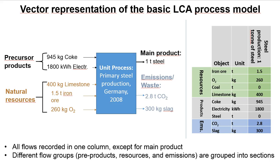We can take a process inventory and put it into vector form. The vector is a column of numbers with three compartments: the first is resource uptake, then product uptake, and then emissions back to the environment. The flow of outputs is the reference unit of the whole column — the column label says steel production, one ton of steel. So everything that goes in and the emissions that go out are normalized according to the main product. Byproducts are typically inventoried as a negative product input.